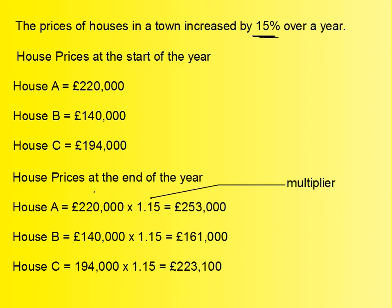In order to find the new value of the houses at the end of the year, we take the original value and we multiply it by 1.15, which is called the multiplier. When we apply the multiplier, we will see that it is basically the percentage expressed as a decimal added to 1.